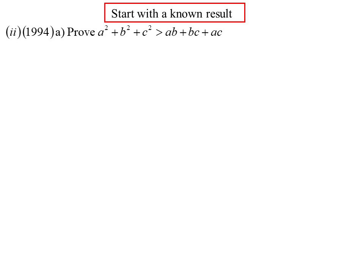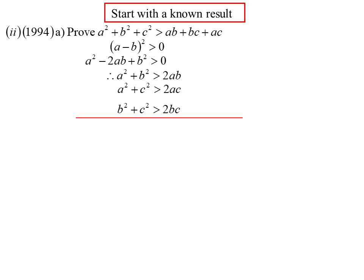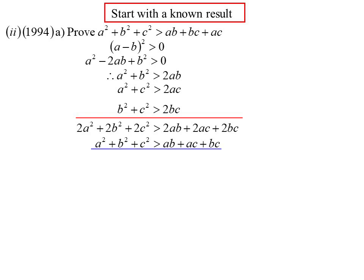I'm dealing with squares and want AB and BC combinations, so expanding a perfect square is a good starting point — it gives squared terms and cross-product terms. Expanding (A minus B) squared gives A squared minus 2AB plus B squared is greater than 0. I can do the same with (A minus C) squared and (B minus C) squared. Since all the inequalities run in the same direction, I can add them together, getting 2A squared plus 2B squared plus 2C squared greater than 2AB plus 2AC plus 2BC. Divide by 2 and we have the result.